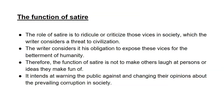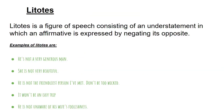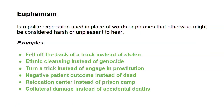Litotes is a figure of speech consisting of an understatement in which an affirmative is expressed by negating its opposite. Examples: 'He's not a very generous man,' 'He is not very beautiful,' 'He's not the friendliest person I've met,' 'It won't be an easy trip,' 'He is not unaware of his wife's foolishness.' It carries a negative connotation and is used a lot in literature.